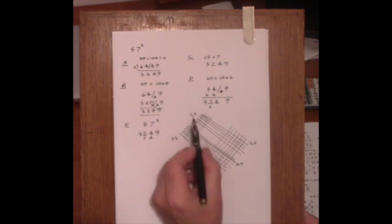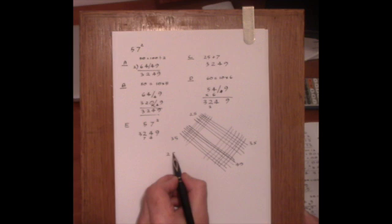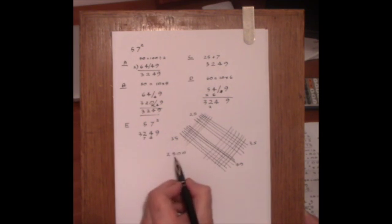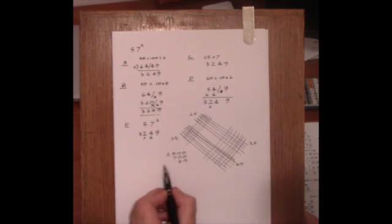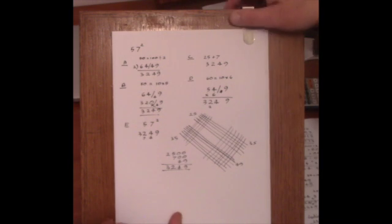And then all we need to do is to add these four numbers together in this format. 25 is 2500. And then we've got two 35s making 700. And then the 49 on the end. And add these numbers up. And we get the answer 3, 2, 4, 9 again. That's quite a fun approach.